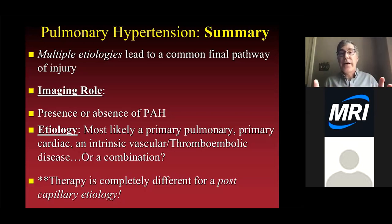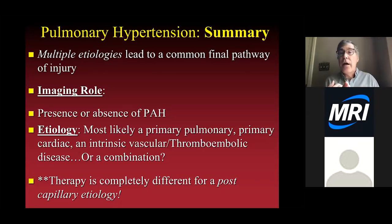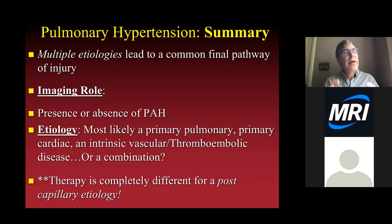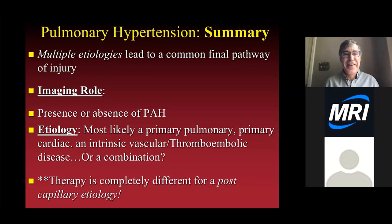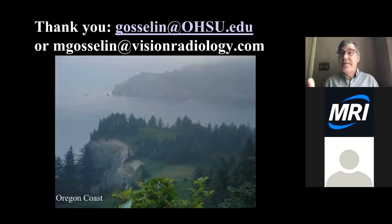In summary: multiple etiologies lead to common pathologic and physiologic consequences. The imaging role is to detect recurrence or persistence of symptoms, identify whether pulmonary hypertension is present, determine etiology—primary lung, primary heart, thromboembolic, or combination—and most importantly, identify post-capillary causes, which require completely different treatment. Patients with post-capillary pulmonary hypertension can become acutely ill from standard pre-capillary PAH medications. Feel free to email me with questions.